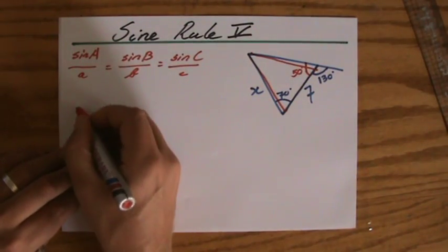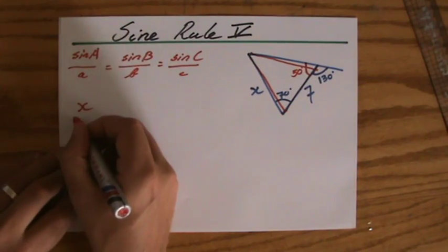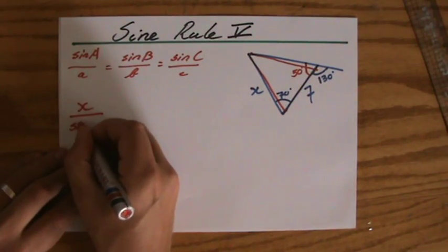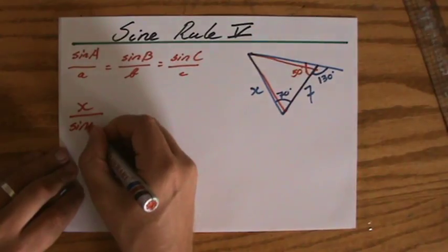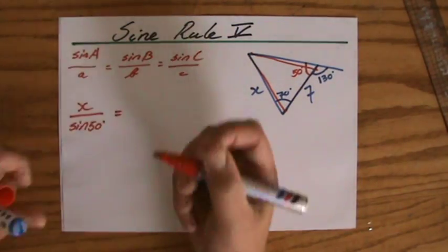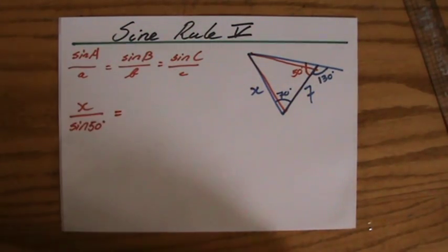Now, I always put my unknown in the numerators. I'm going to say X over the sine of 50 degrees equals, and the other thing I need for the sine rule is a full team, which means an angle and its teammate length.